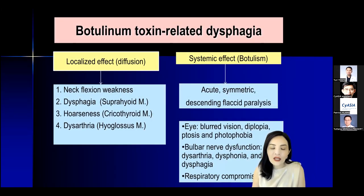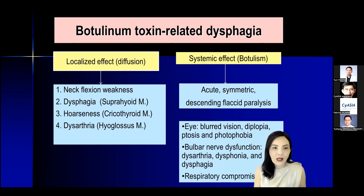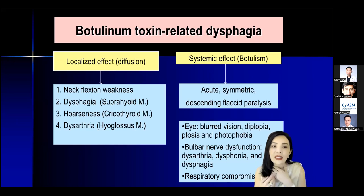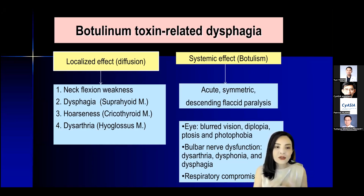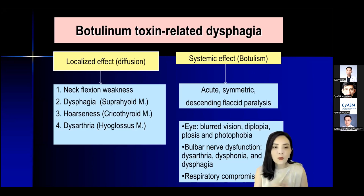If it's botulinum toxin-related dysphagia, it could be from localized diffusion. When the patient has a history of injecting on the neck, it could be a local diffusion effect — injecting too much or too deep past the platysma into the muscles that cause neck flexion weakness, which are the suprahyoid, cricothyroid, and hypoglossal muscles.